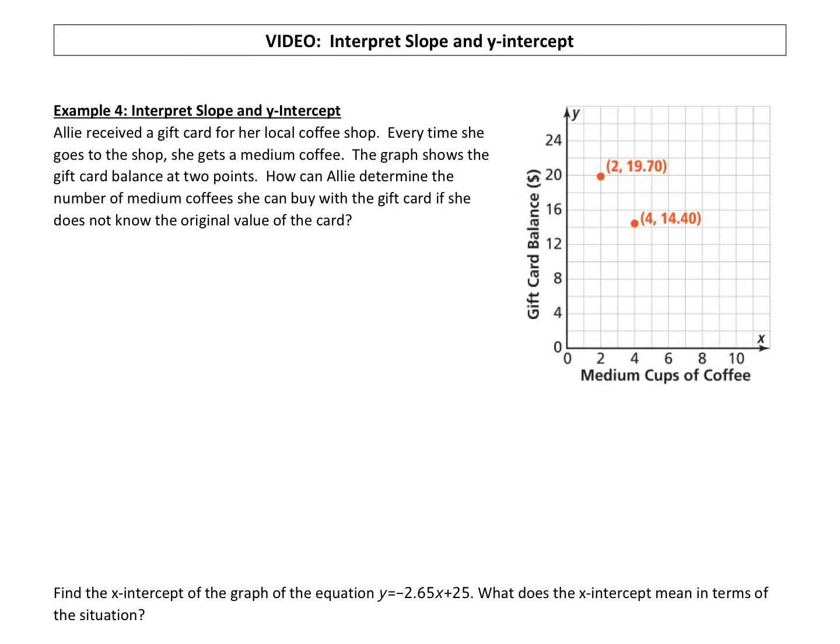All right, so let's work on interpreting slope and y-intercept in a given situation. We've got Allie. Allie received a gift card for her local coffee shop. Every time she goes to the shop she gets a medium coffee. The graph shows the gift card balance at two points. How can Allie determine the number of medium coffees she can buy with the gift card if she does not know the original value of the card?